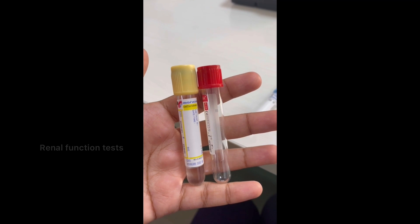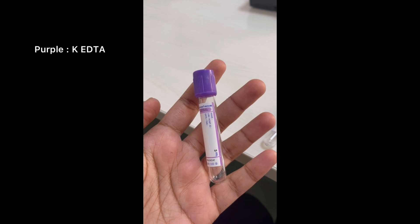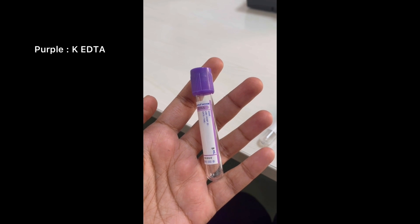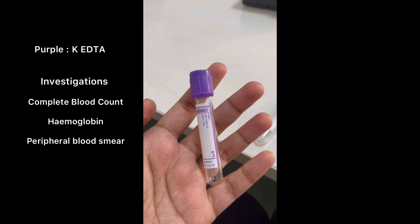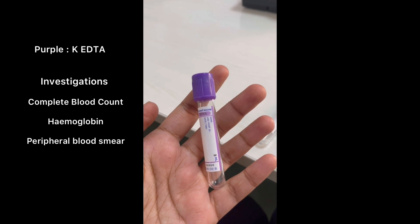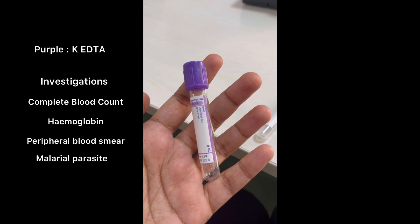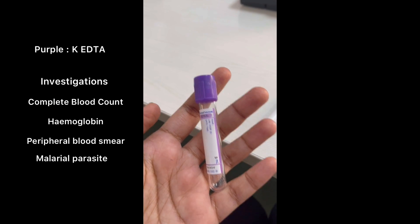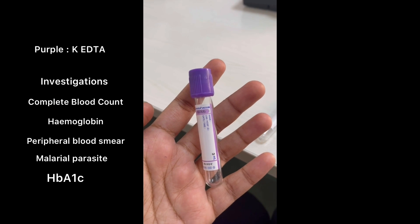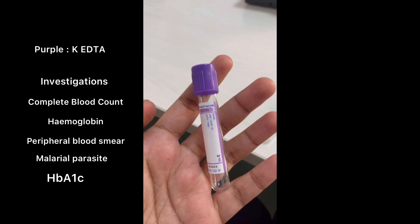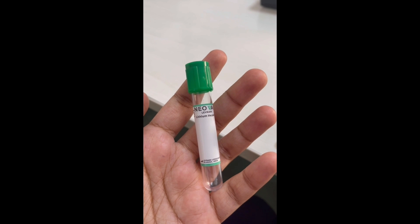This is a purple vacutainer — it contains potassium EDTA, which also acts as an anticoagulant. This is the one we use for complete blood count, to assess hemoglobin levels, and for peripheral blood smear. In cases of malaria, the peripheral blood smear for the parasite also uses this tube. For HbA1c levels we use EDTA tubes, and we can also use this tube for estimating ESR by Wintrobe's method.